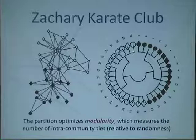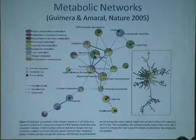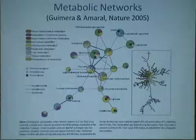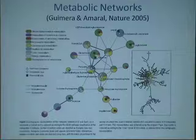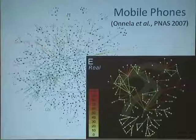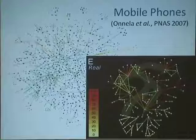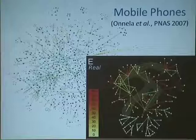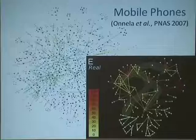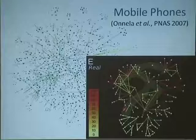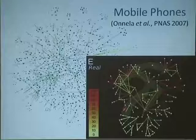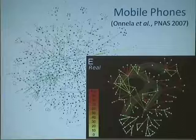In the interest of time, I'll move into pretty-picture mode. There's a lot of work using community detection to address the theme of how structure and function influence each other. There's important work on metabolic networks by Guimera and Amaral. There's also neat work on mobile phone data by my colleague J.P. Onnela. Each dot is a person and the links are actual phone calls between them. The reason you might want to study this is to understand the spread of information through the network.